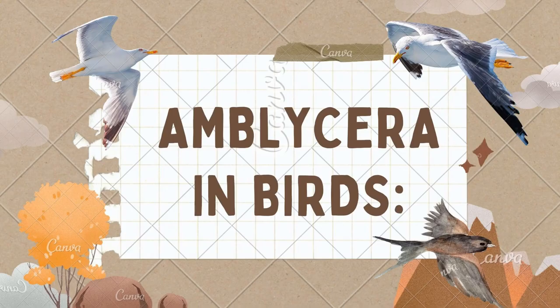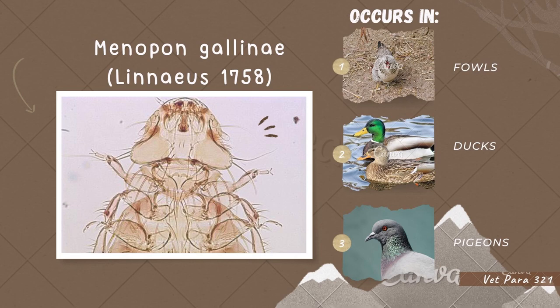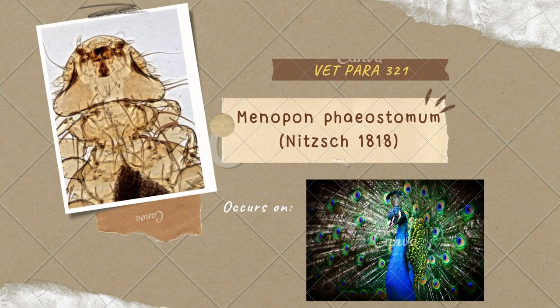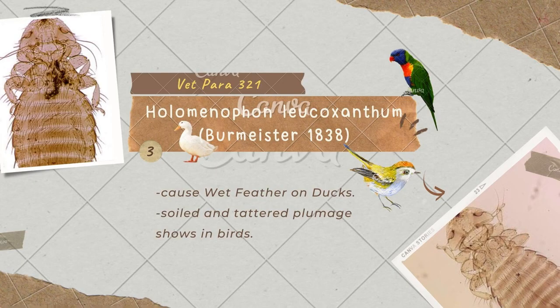Amblycera in birds: Menopon gallinae, called the shaft louse of poultry, is pale in color. This species occurs on fowls, ducks, and pigeons, while Menopon phaeostomum occurs on the peacock. Menopon leucoxanthum has been demonstrated to cause damage to the wing feathers of ducks. Infested birds show soiled and matted plumage that no longer repels water, causing them to chill and potentially die from pneumonia.